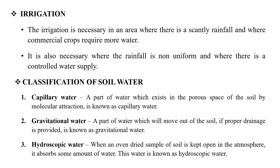Here is the first question of irrigation. In a particular area, we have a few crops and we are going to start the process of irrigation. Irrigation is necessary where there is non-uniform rainfall in that area. We use irrigation in such areas.